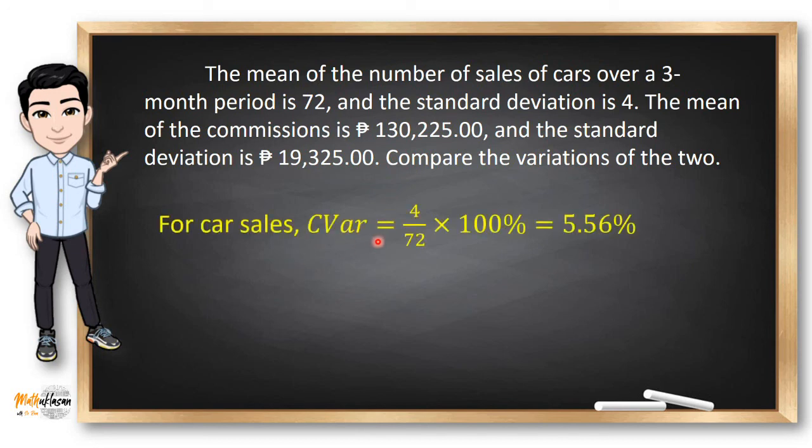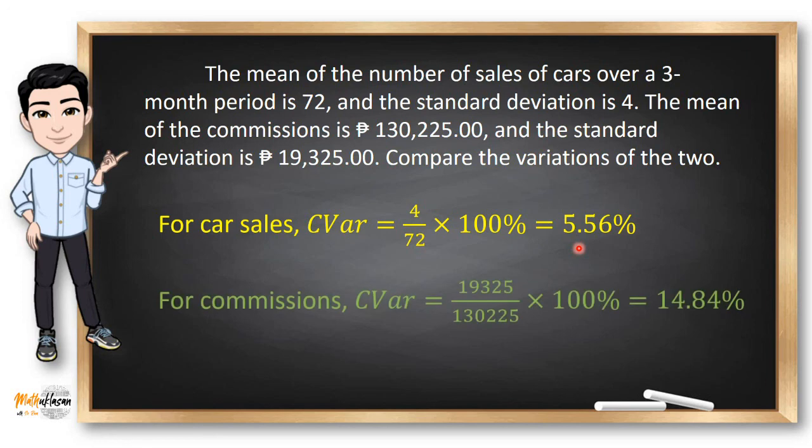For the car sales, CVAR is just equal to 4 divided by 72 because 4 is the standard deviation and 72 is the mean. Times 100, we have 5.56%. For the commissions, we have CVAR equals 19,325 because this is the sample standard deviation for the commission, and 130,225 for the mean of the commission. Times 100%, it's equal to 14.84%. So in terms of dispersion, commission varies greatly over the car sales, which has only 5.56% of coefficient variation.